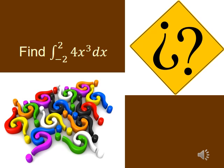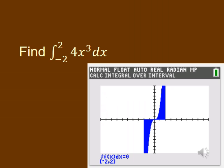Another one: find the definite integral from negative 2 to 2 of 4x³ dx. When I graphed it, the calculator gave me an answer of 0. Look at that graph — you'll notice we have basically a rotation. Half of it on the left is the exact same amount as the half on the right, but the left part is below the x-axis and the right part is above. Those two areas cancel each other out, giving 0. If you did this by hand, the antiderivative would be x to the 4th, and you'd have 16 minus 16, which is 0.